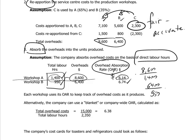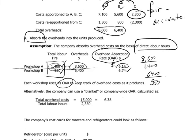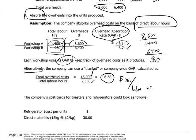This is a workshop-specific or departmental overhead absorption rate. We could take a different approach and pool all labor hours in the company — 1,400 plus 950 equals 2,350 hours — and divide the full $15,000 of overheads by that total, ending up with a factory-wide overhead absorption rate of $6.38 of dollar overheads per direct labor hour worked. That's an alternative way to tackle this.